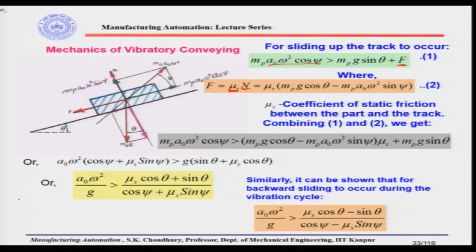Similarly, it can be shown that for backward sliding — that is, the part going down — the forces reverse, and the condition becomes: a0·ω²/g > (μs·cos(θ) − sin(θ)) / (cos(ψ) − μs·sin(ψ)). These are the two conditions for the part to go up the track or to slide down the track.